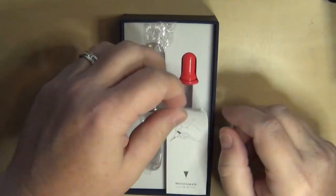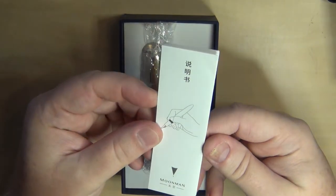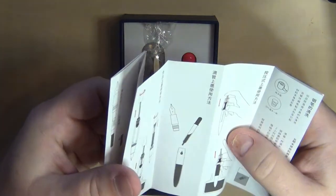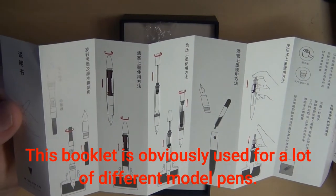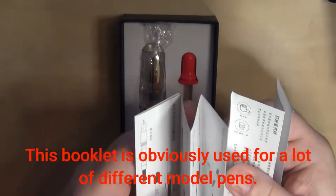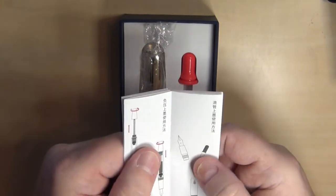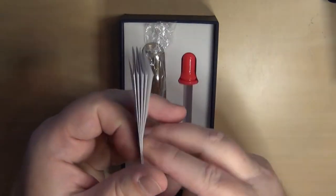You have a generic booklet that comes from Moonman. You can see here that it has various methods of how to fill the pen, which is not a bad thing. You will see the eyedropper instructions are right here. We'll talk about that here in just a moment.